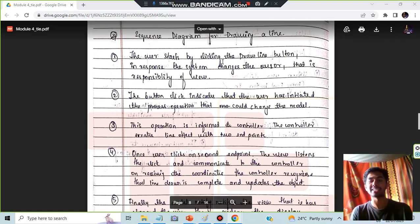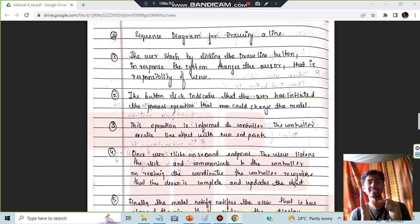The user starts by clicking the draw line button in response, the system changes the cursor, that is responsibility of the view. When a user clicks the button for a draw line, the view will change the view.